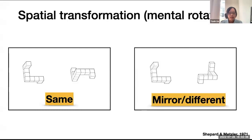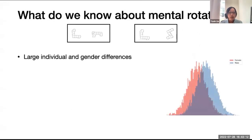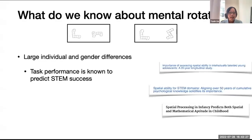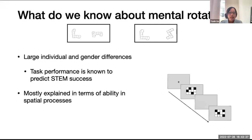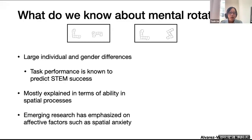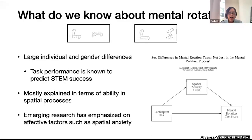Research in mental rotation has found large individual and gender differences in test performance, and the magnitude of the gender differences is one of the largest found in cognition. Performance on mental rotation tests also predicts success in STEM domains. However, it remains controversial why such differences exist. Traditionally, research has emphasized the role of cognitive factors such as working memory, but more recently, research has paid increasing attention to affective factors such as spatial anxiety.